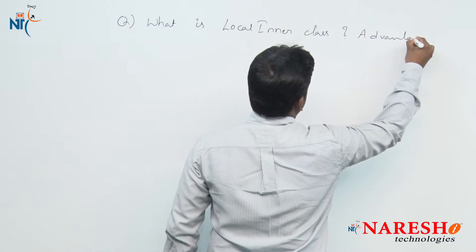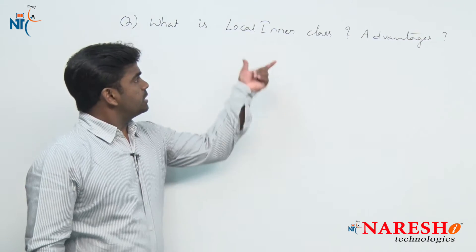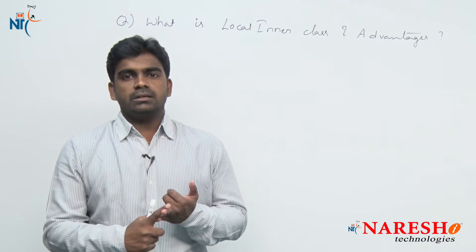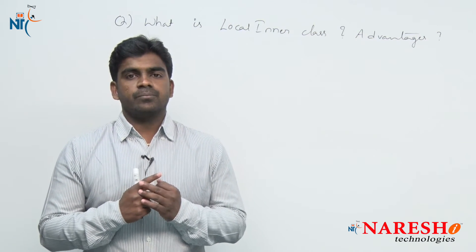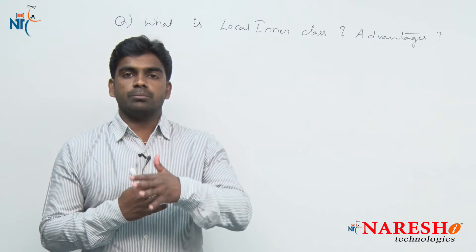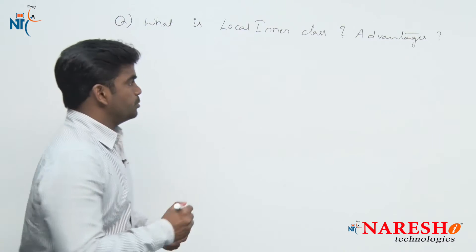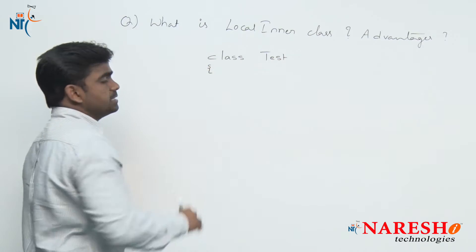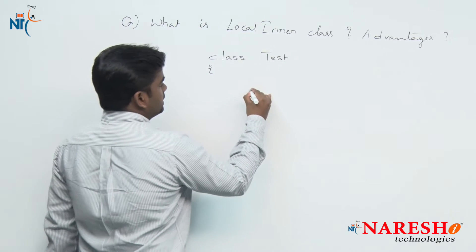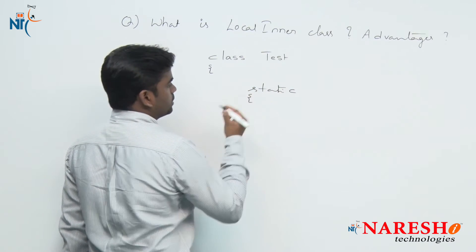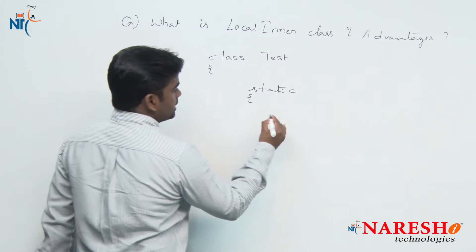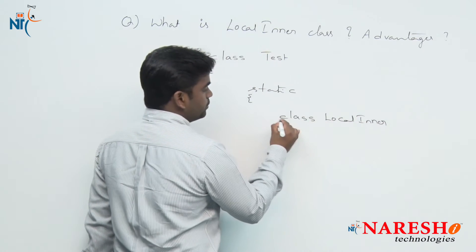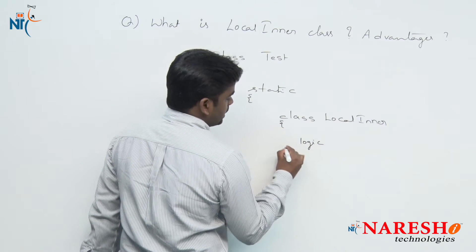What are the advantages of a local inner class? First of all, a local inner class means defining a class inside a block, or inside a method, or inside a constructor. Writing a class inside a block, method, or constructor is called a local inner class. For example, take a class called Test — defining a class inside the class is an inner class, but now defining a class inside a block, such as a static block. Inside a static block, if you write any class, it comes under a local inner class. You can give it any name, and here it contains some logic.